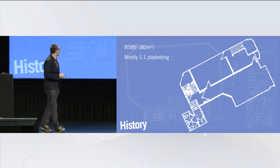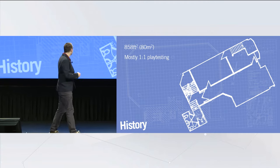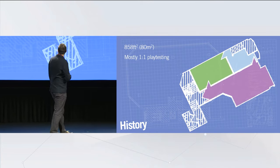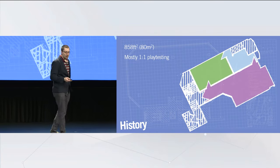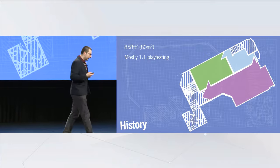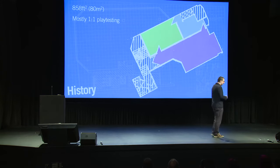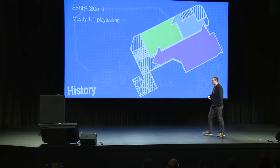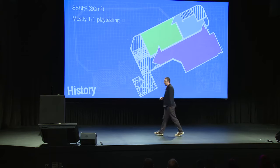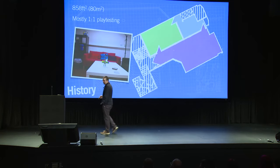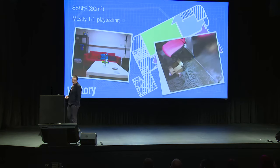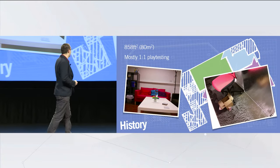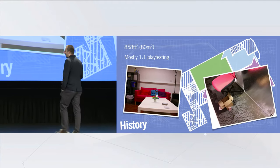It helps to know where we came from. This is our first office — the floor plan. The entrance was here and we had three rooms; it was about 80 square meters or 858 square feet. At the time we were mostly doing one-to-one play testing. We knew we needed to move — we were getting asked questions by developers that we needed scale for, more players. And then we had a flood. That's our floor covered in mud and smelly stuff, so we knew we needed out.